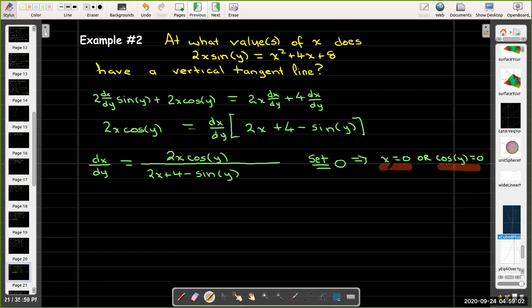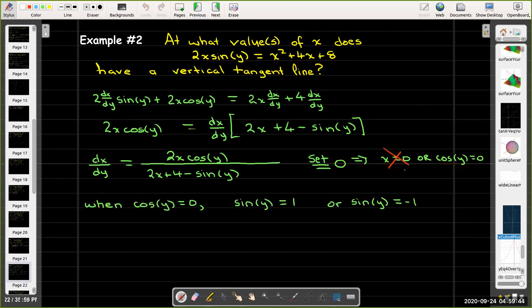But think about this. If x equals 0, going back to my original equation, if x equals 0, I'll wind up with 0 equals 0 plus 8. And that is, of course, a contradiction. That is a false statement. So we're not going to use x equals 0.